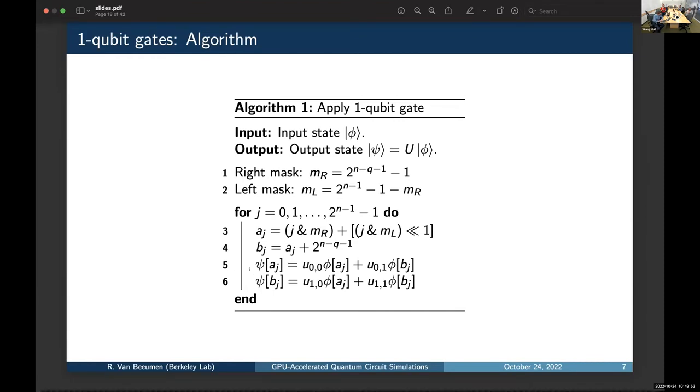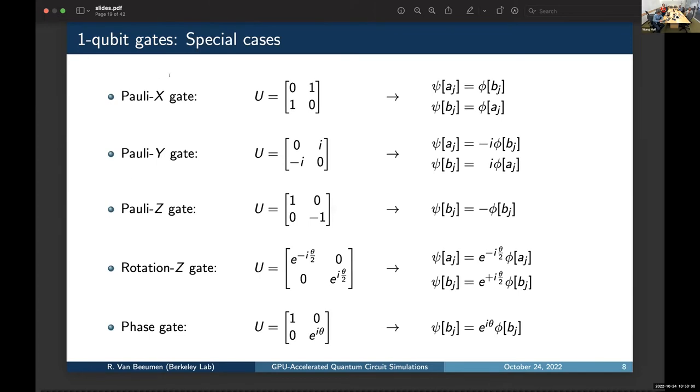Now, this is the algorithm for a general one-qubit gate. Of course, if we have a specific structure, we can further simplify lines five and six of this algorithm. For example, if we have a Pauli X gate, then the unitary operation is just a swap operation. With a Pauli Y, we have a swap operation and multiply with minus i and i. For the Pauli Z gate, and also for the phase gate, we only have to update half of the vector. And then, also for the rotation Z gate, we can get very efficient operations because it's a local operation, basically just a diagonal scaling. So, more importantly, if we have a particular sparsity structure in the gates, we should definitely exploit it.